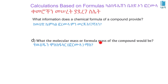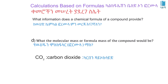The chemical formula also tells us the molecular mass or formula mass of the compound. The molecular mass or formula mass is the total mass of all the elements in the chemical formula. For carbon dioxide, carbon has a mass of 12 grams per mole and oxygen has a mass of 16 grams per mole.